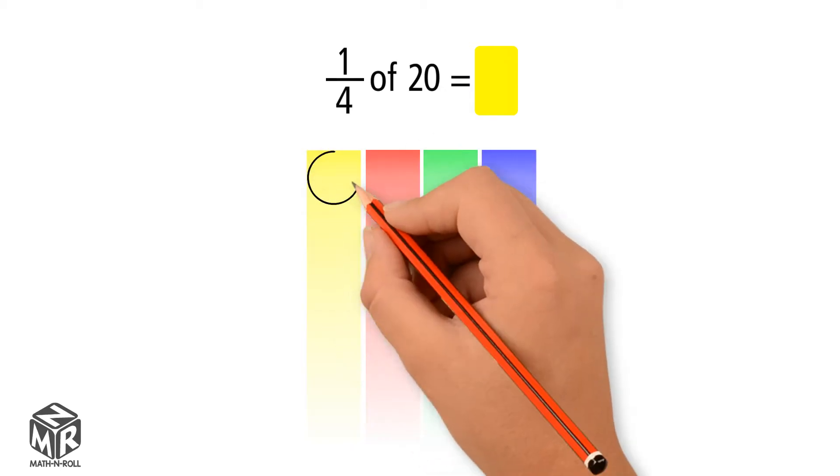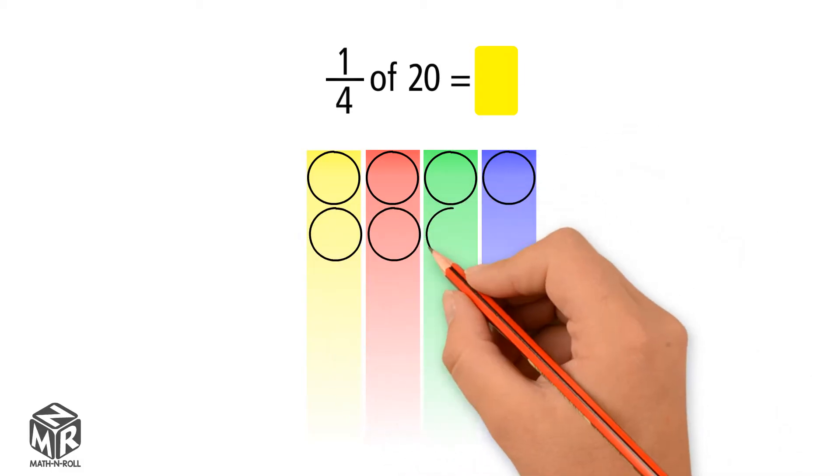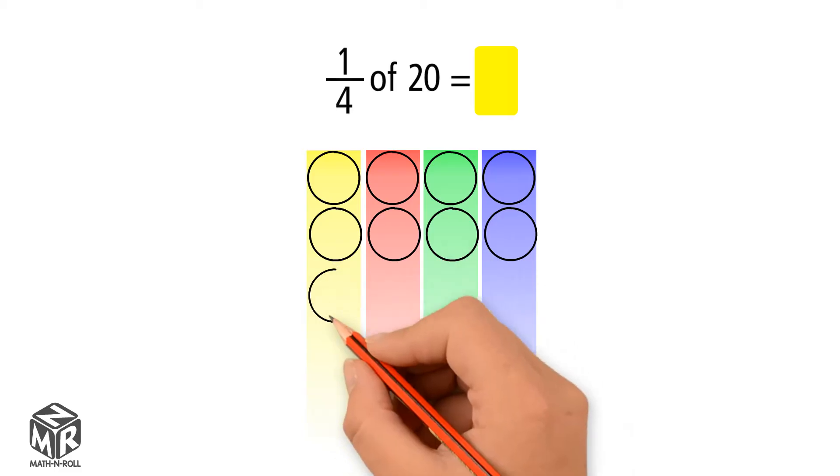Then, we draw a row of four counters. Continue to draw as many rows of four counters until you have 20 counters.